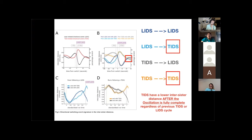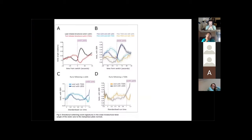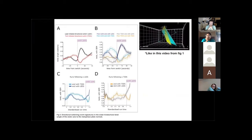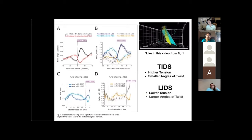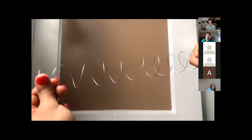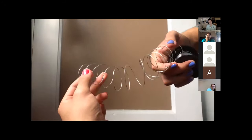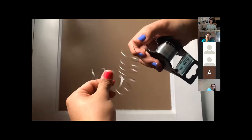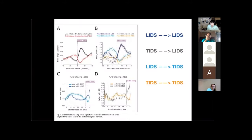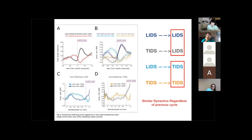Before going into the clock model, let's look at figure five. They focus on the way the sisters twist away from the metaphase plate as they oscillate. They noticed that as the distance between sisters increases, there is an inverse relationship with the amount of twist. So TIDS with higher tension have smaller angles of twist, versus LIDS with lower tension having larger angles of twist. They liken this to a spring, where high stretch aligns the sisters better under more force, while low stretch allows more movement from thermal and mechanical fluctuation.